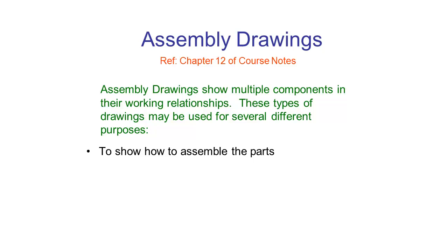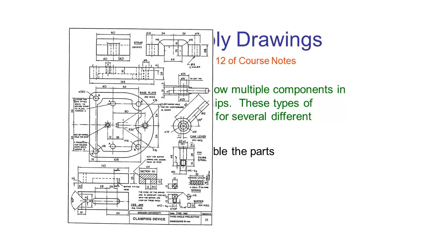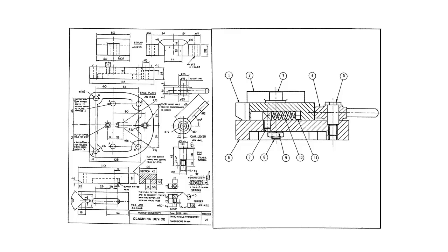The first purpose is to show how to assemble parts. We have a sheet of drawings with six different parts representing a device called a clamping device. If I was to give you each of these parts, how would you know how to put them together? From that drawing it's not possible to tell how they all go together. So what we do is produce an assembly drawing like this one here, where we have each of the different parts in their working relationships, and there's enough information to put the entire assembly together.